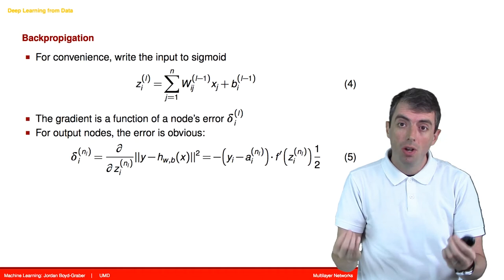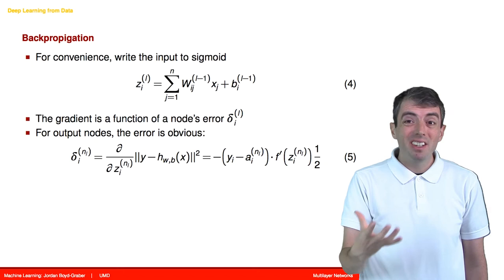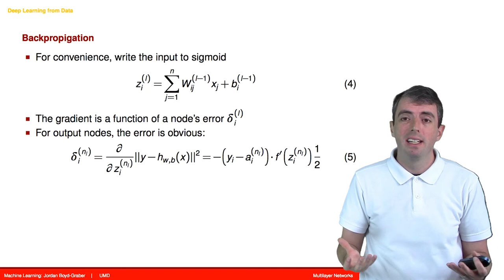For output nodes, that makes a lot of sense. But what does it mean for a hidden unit to make an error? Now recall that these hidden nodes are features, some representation of the data that we're learning. And so they don't mean anything. What does it mean for them to make an error then?